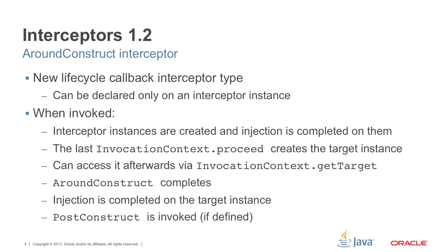With around construct, the story is a little different. First, the interceptor instances are created and injection is completed into the interceptor instances. If one or more of those interceptor instances inject the target instance, that injection won't be done yet. After interceptor instances are created, they are invoked, and the last invocation context proceed call in the chain results in the instance creation and constructor injection. After the proceed call, the interceptor can access the instance and use it via invocation context get target method. After around construct completes, injection is completed on the target instance, and at that moment the target instance is ready for business.